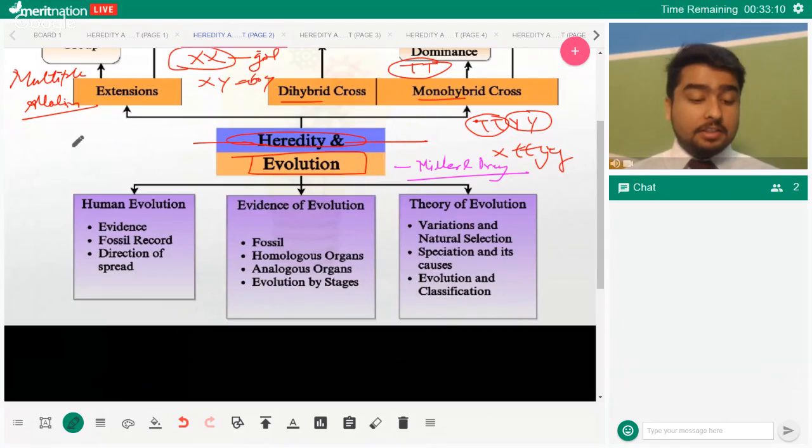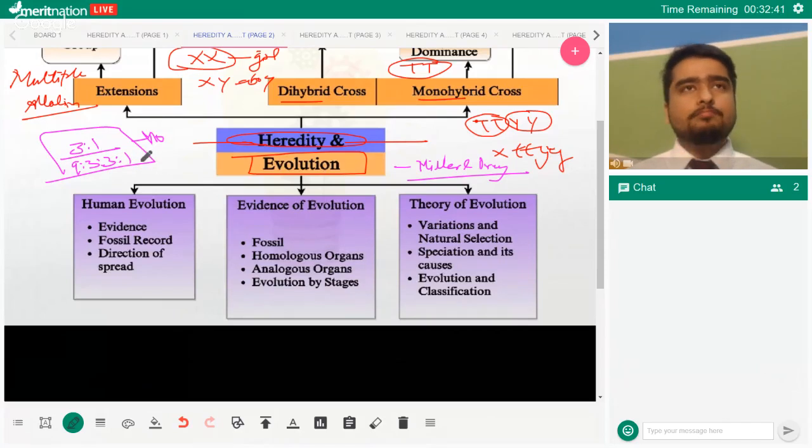First thing, thank you Nickel again for reminding that the ratio - the genotypic ratios and the phenotypic ratios for the monohybrid cross should be available to you. So 3 is to 1, and 9 is to 3 is to 3 is to 1. You should be able to deduce these ratios. You should be able to understand what the ratios mean. These are for monohybrid cross. For dihybrid cross you only need the phenotypic ratio, you don't need the genotypic ratio.